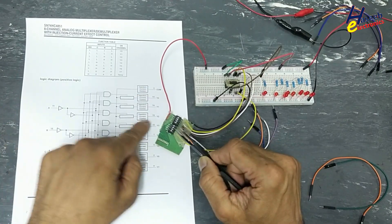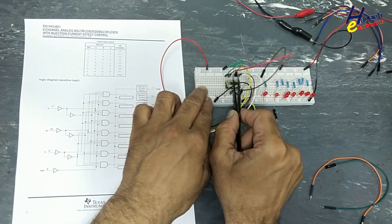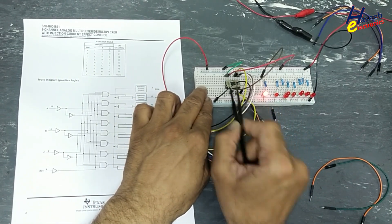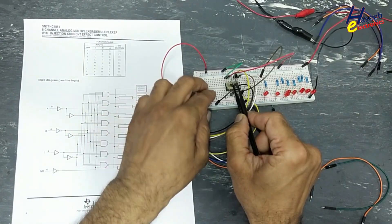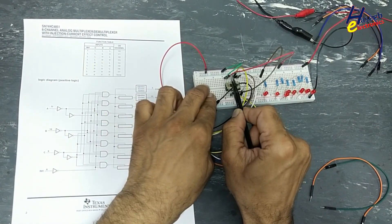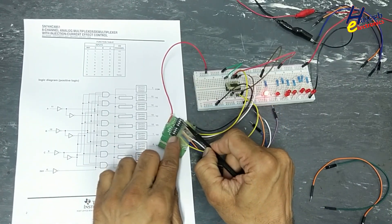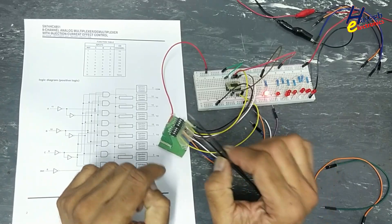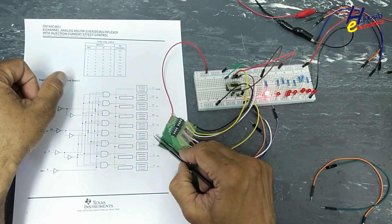Zero one zero. Pin number 15. Yes. Zero one one. Pin number 12. So basically, these addresses are allocated for these pins that are for output or input.